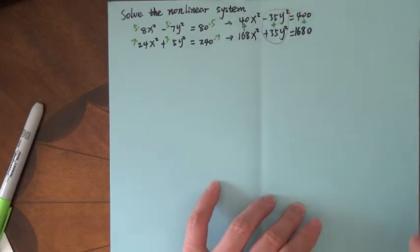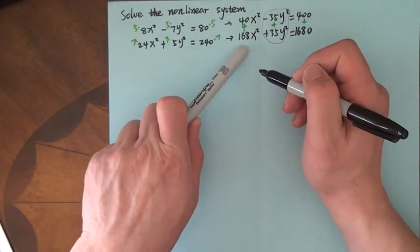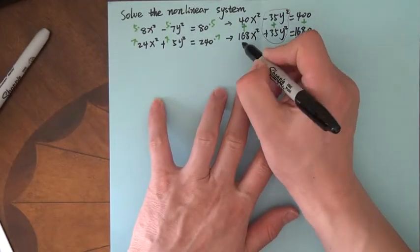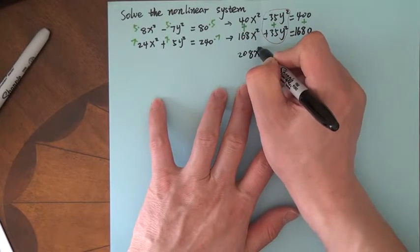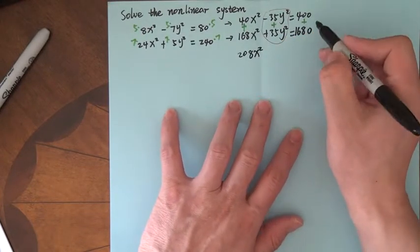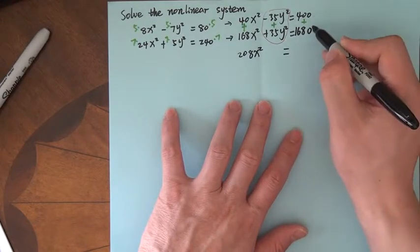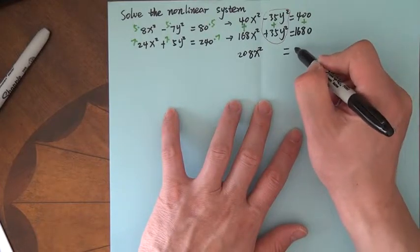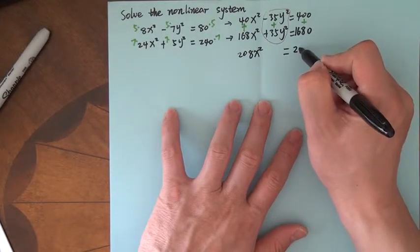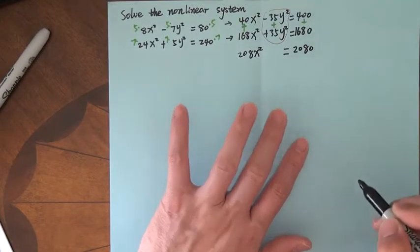What do we get? We have 40 plus 168, that gives us 208x squared. Those two cancelled, so we have 400 plus 1680, that's 2080.